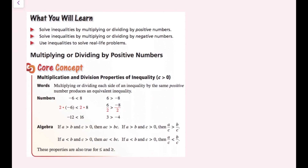Multiplying or dividing each side of an inequality by the same positive number produces an equivalent inequality. You can see in these examples: if we multiply this inequality by 2 on both sides, we get an equivalent inequality. Same thing if we divide by positive 2 on both sides. This is very similar to addition and subtraction when it comes to doing the same thing on both sides.